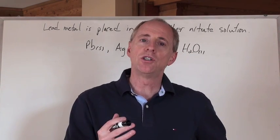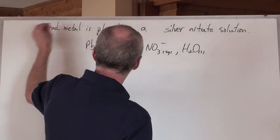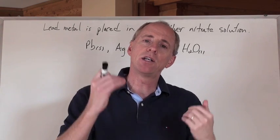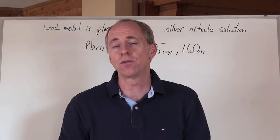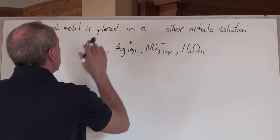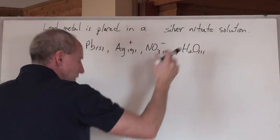But here's what you do when you're given a sentence. It says lead metal is placed in a silver nitrate solution, and you want to write a net ionic equation to determine the spontaneity of the reaction. You look at that and say, okay, lead metal and silver nitrate solution.